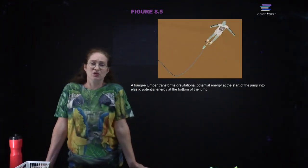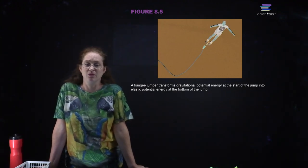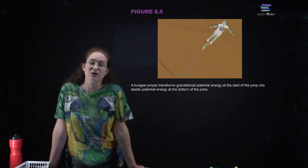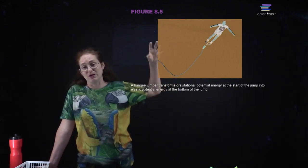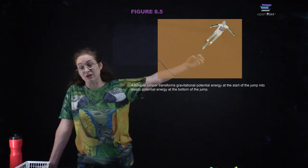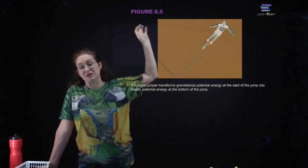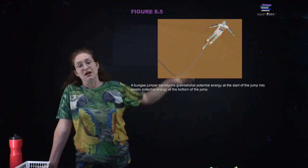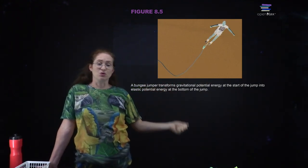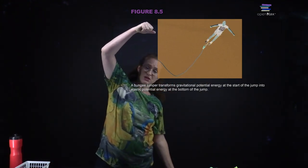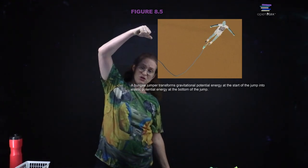Consider a bungee jumper falling down. The bungee jumper's gravitational potential energy at the very beginning is converted into elastic potential energy at the bottom. In the middle, it's all kinetic energy because the bungee jumper is going very fast. Then as the bungee jumper continues to fall, the bungee cord gets stretched out and you have potential energy from the bungee cord being stretched.